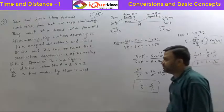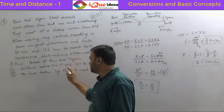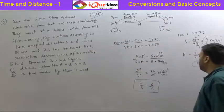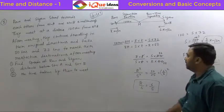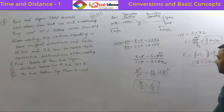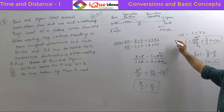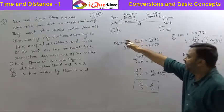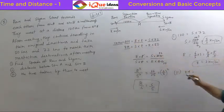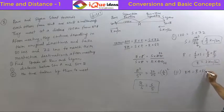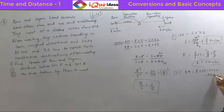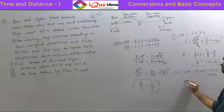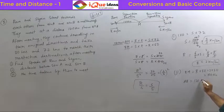Now for the distance between station A and station B. We need BM, which is r × 50 = 2 × 50 = 100 km. So AB = AM + BM = 120 + 100 = 220 kilometers.